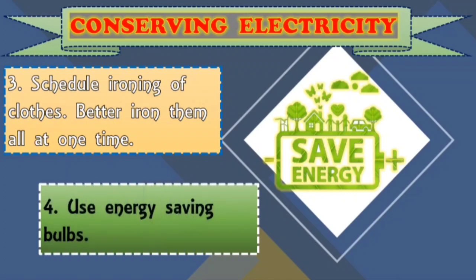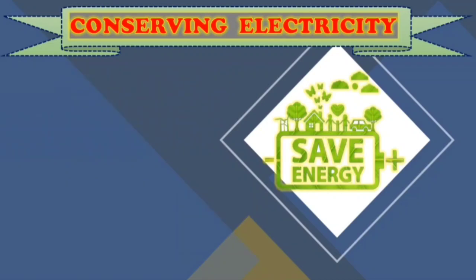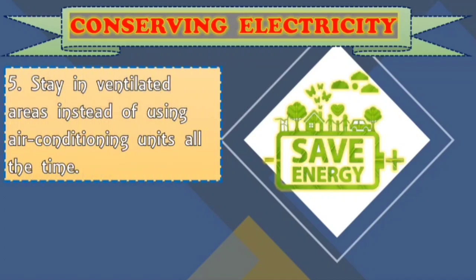Number four is use energy-saving bulbs. Napakalaking tulong nito because these bulbs use less electricity but produce sufficient light. Parehas lang yung light na binibigay, pero yung mga energy-saving bulbs ay nakakatulong para mabawasan yung bill ng iyong kuryente. Number five is to stay in ventilated areas instead of using air conditioning units all the time. Kapag mahangin naman sa labas, pwede mong buksan yung mga kortina at pinto, para hindi ka na gagamit ng electric fan o kaya aircon. So in that way, maleleseng yung electricity.